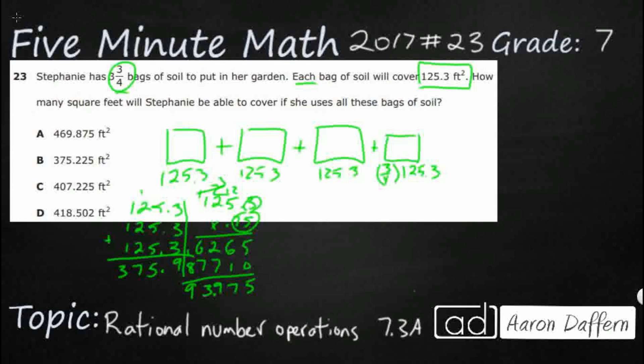And then let's go ahead and add our 375.9. Make sure we line everything up correctly. We'll put some zeros there just to make it not look so bad.